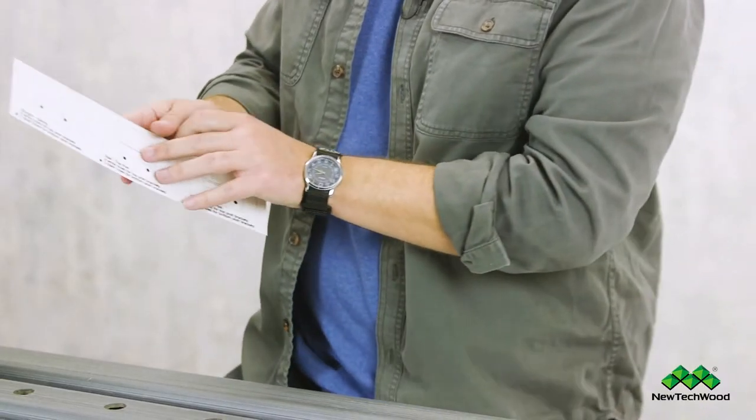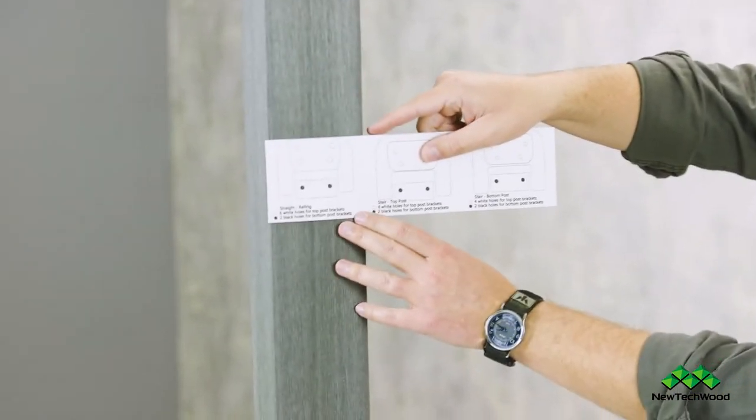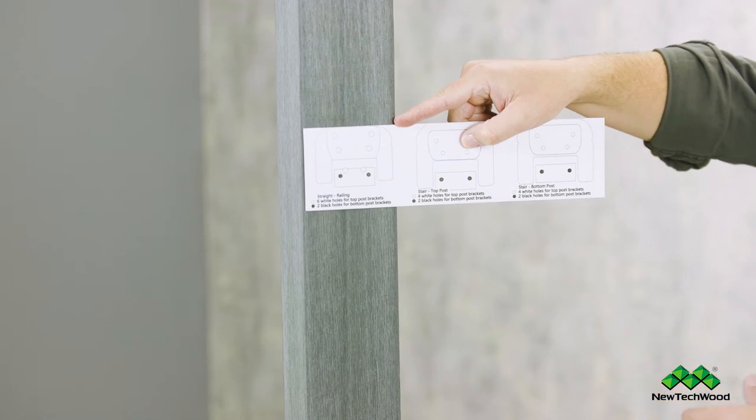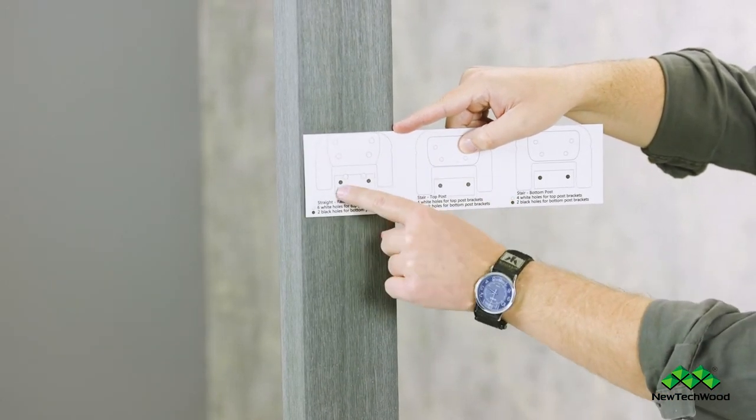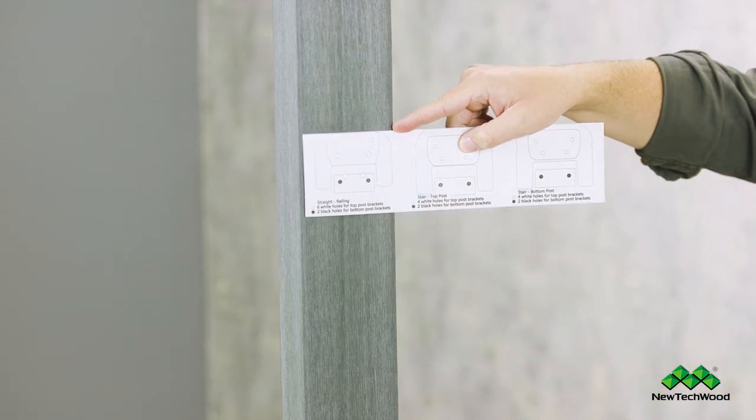So you can see if you just hold this up just like this you can actually tape this right to your post and then you can mark where these holes are and you can pre-drill right through that if you want to. So that's really handy.